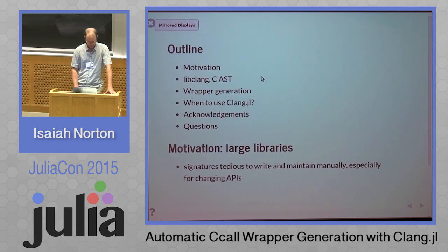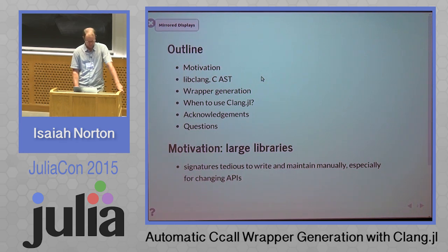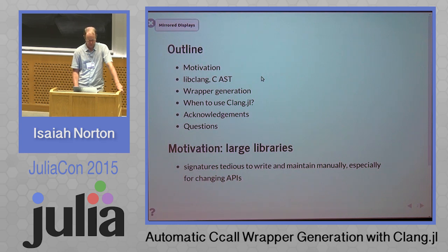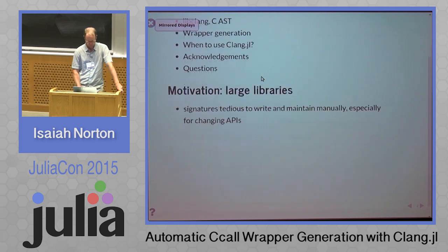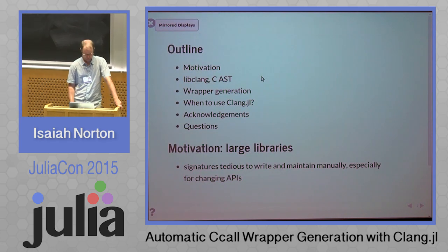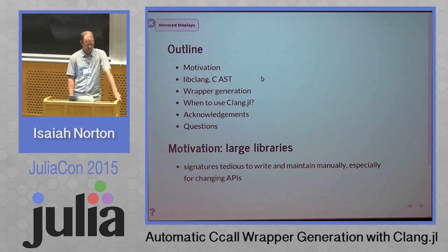Quick outline: talking about the motivation for Clang.jl and where you should use it, and a very brief introduction to libclang itself and the AST. The motivation is large libraries where you have signatures that are tedious to write and maintain manually, especially for changing APIs.